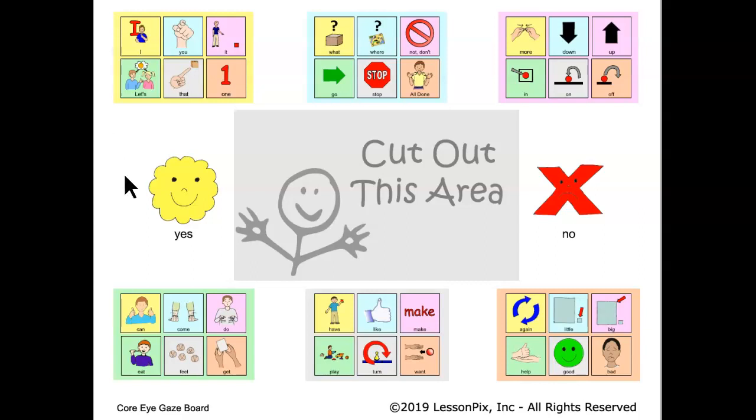So for the word 'get', the AAC user would first look at the lower left set of words, and then look at the orange set of words to indicate that 'get' is color-coded orange. Typically, this is all then confirmed by looking at yes or no after the communication partner speaks the word.